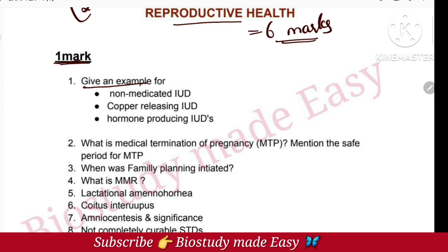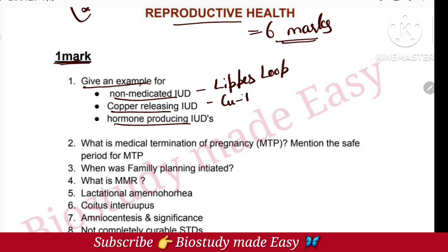Give an example for non-medicated IUD, copper-releasing IUD, or hormone-producing IUD. For non-medicated IUD, the example is Lippes Loop. For copper-releasing IUD, examples are Copper-T, Multiload 375, and Copper-7.